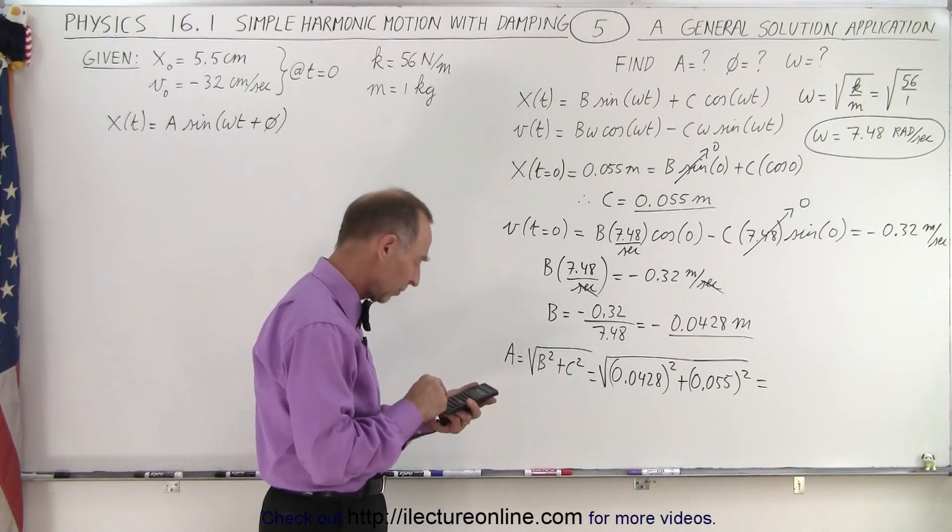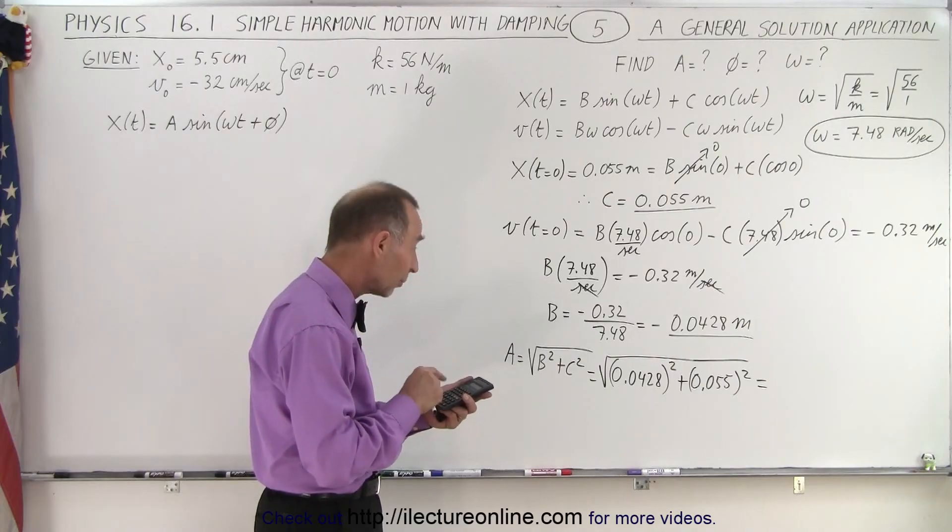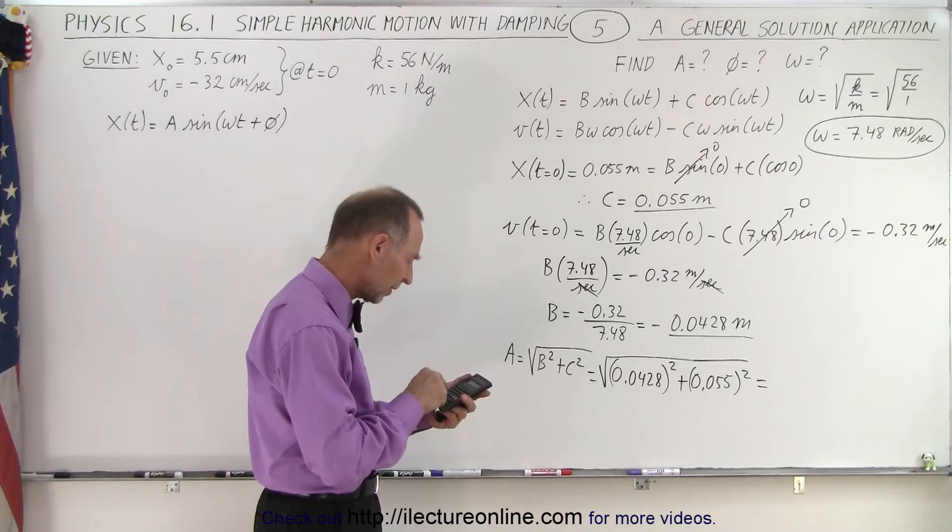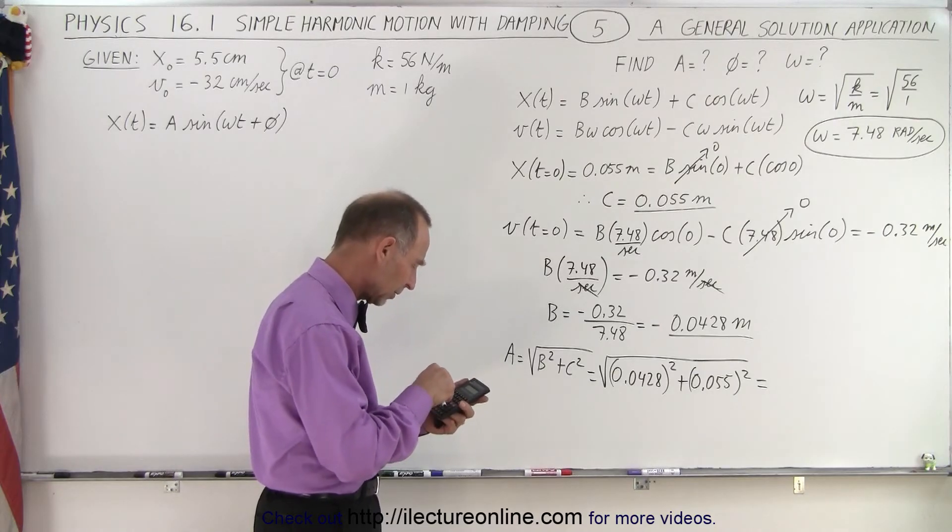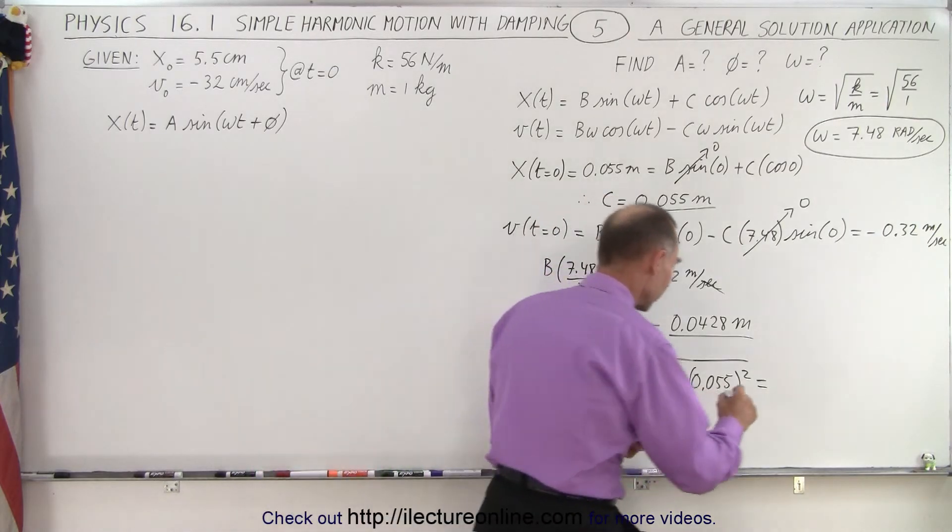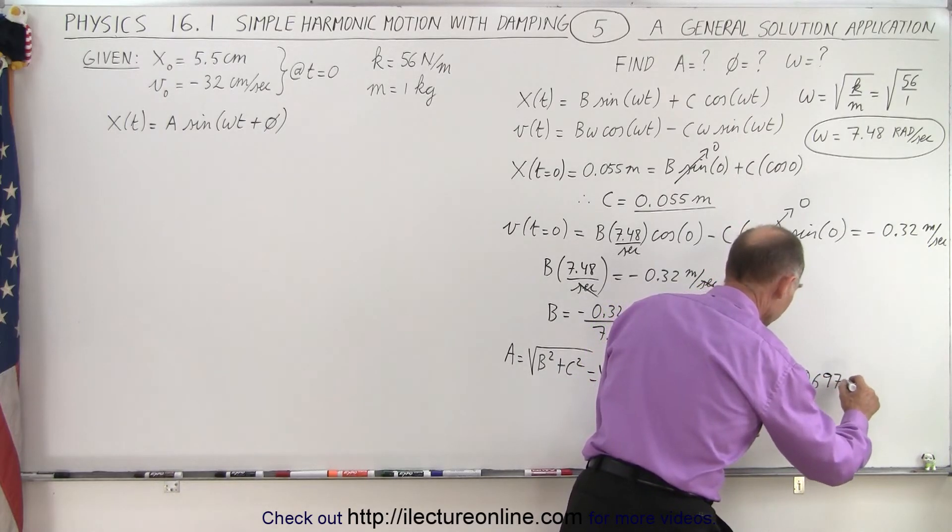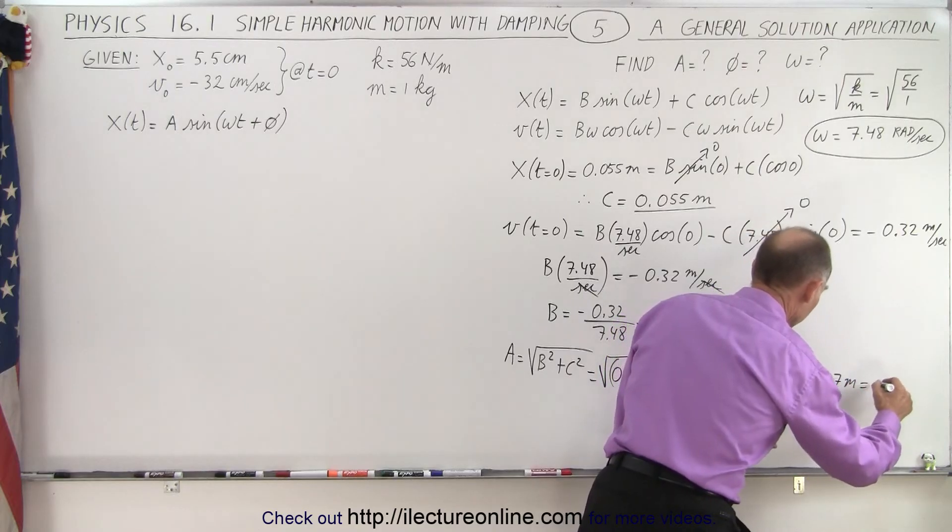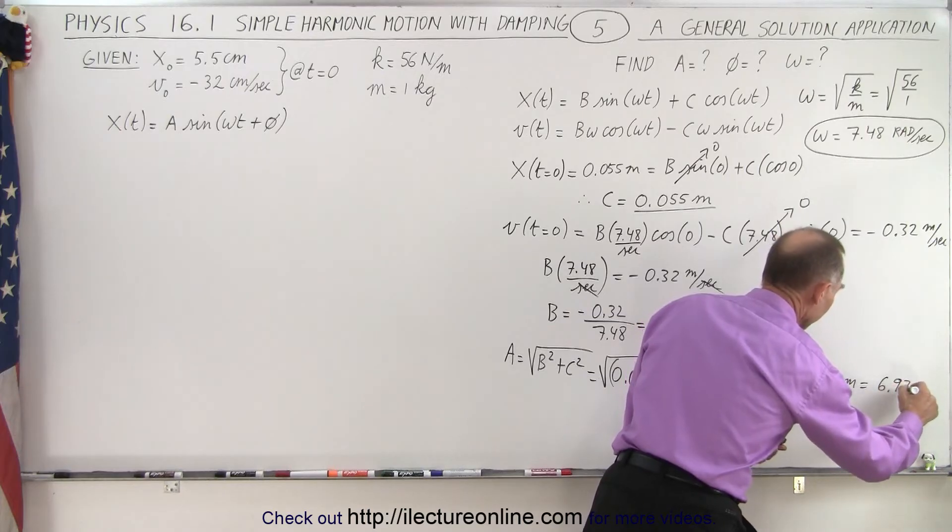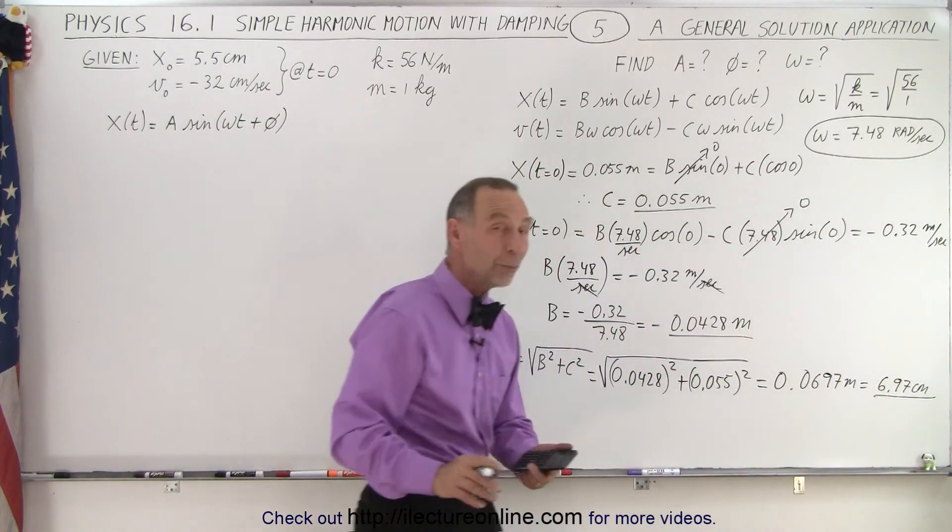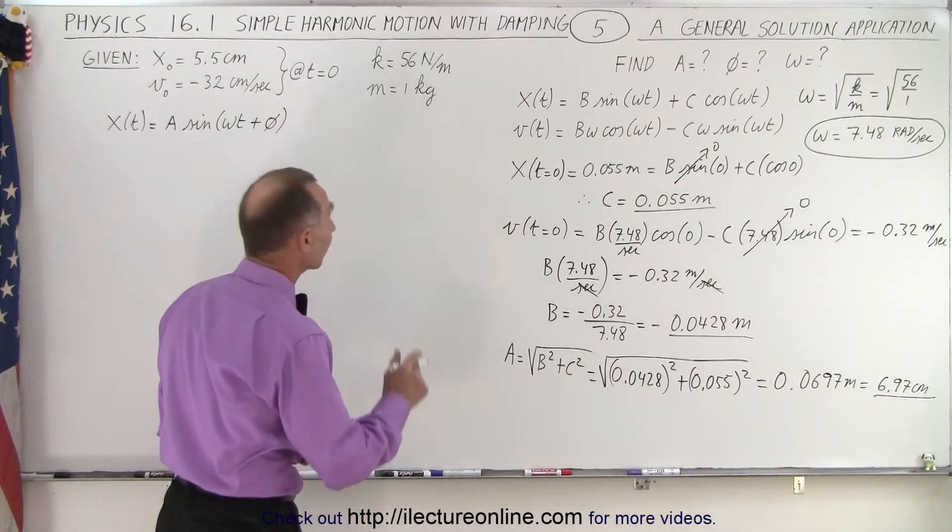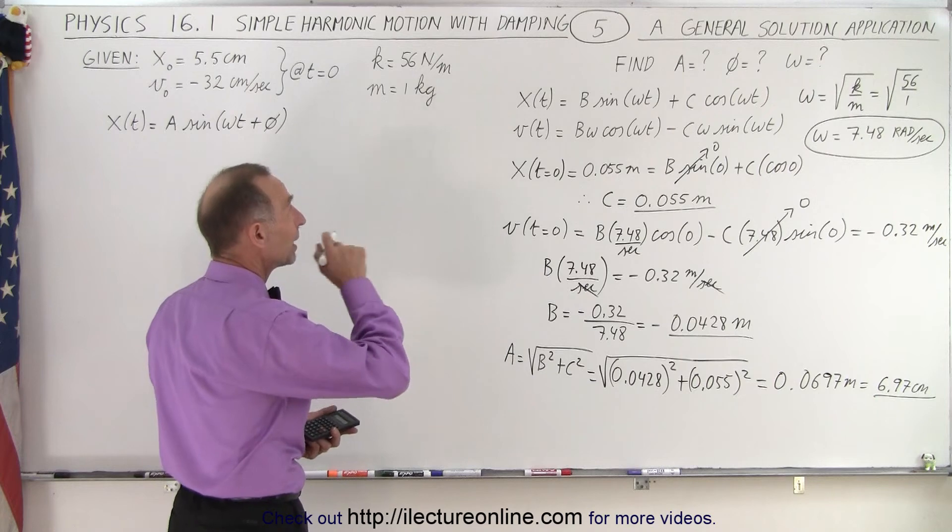Let's square this, plus 0.055 squared, take the square root, that gives us 0.0697 meters, which is equal to 6.97 centimeters. So that's the amplitude of the oscillation, almost 7 centimeters. Now we have the amplitude, we have omega, we still need the phase angle.